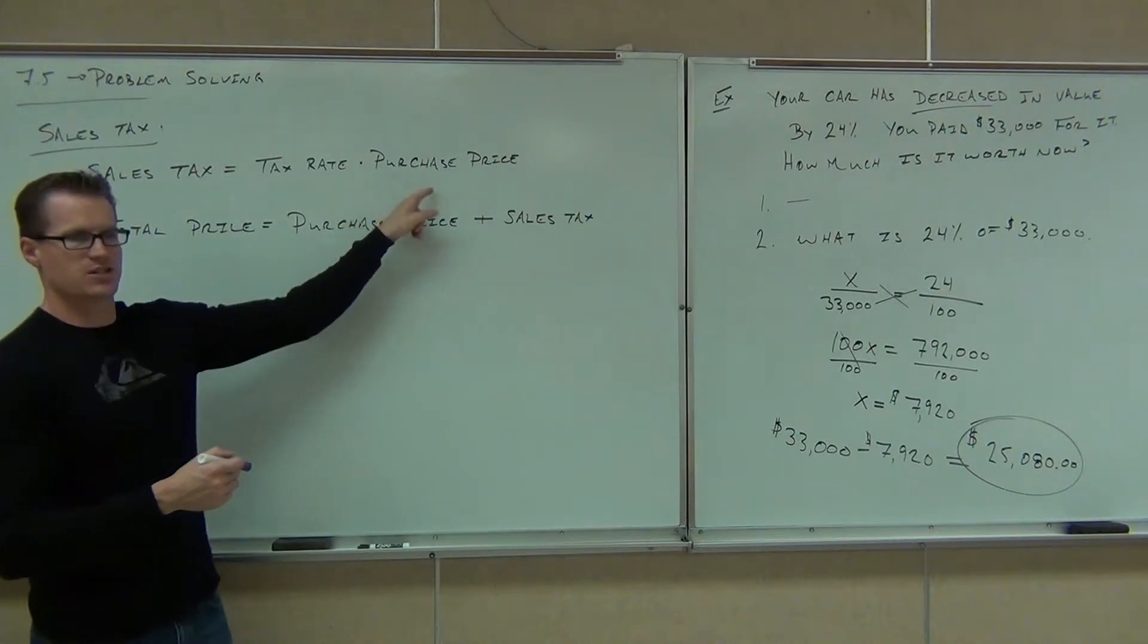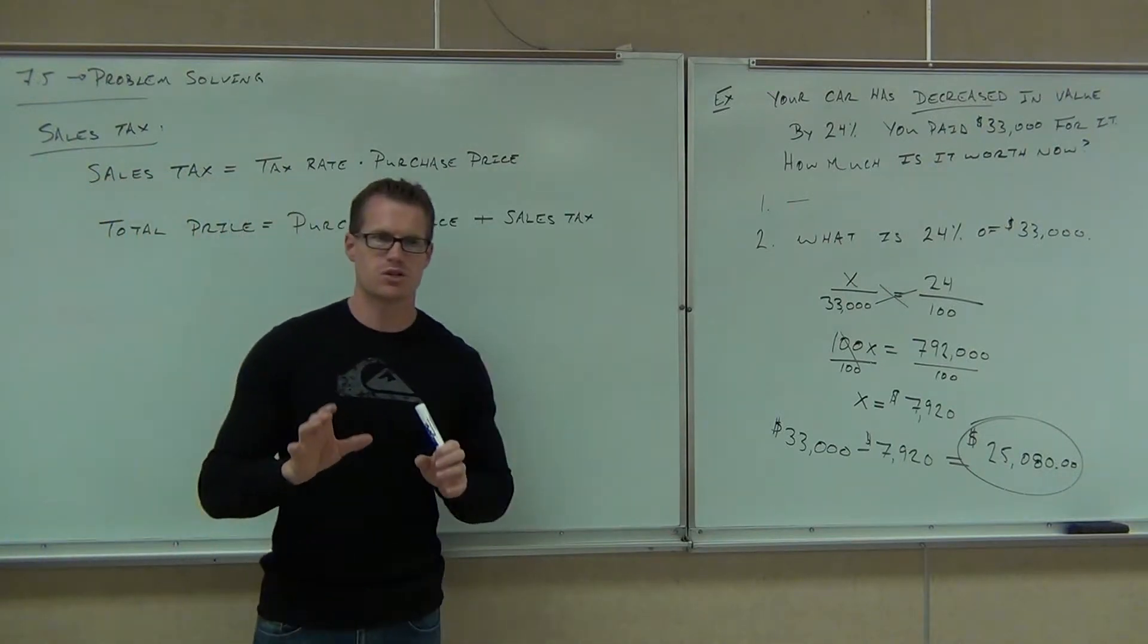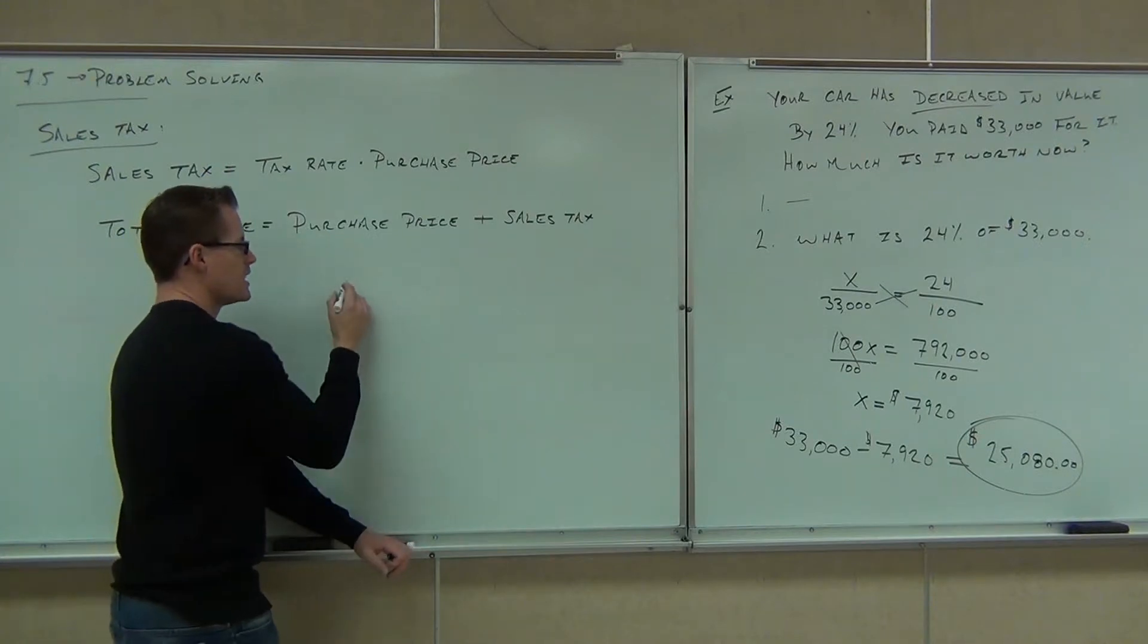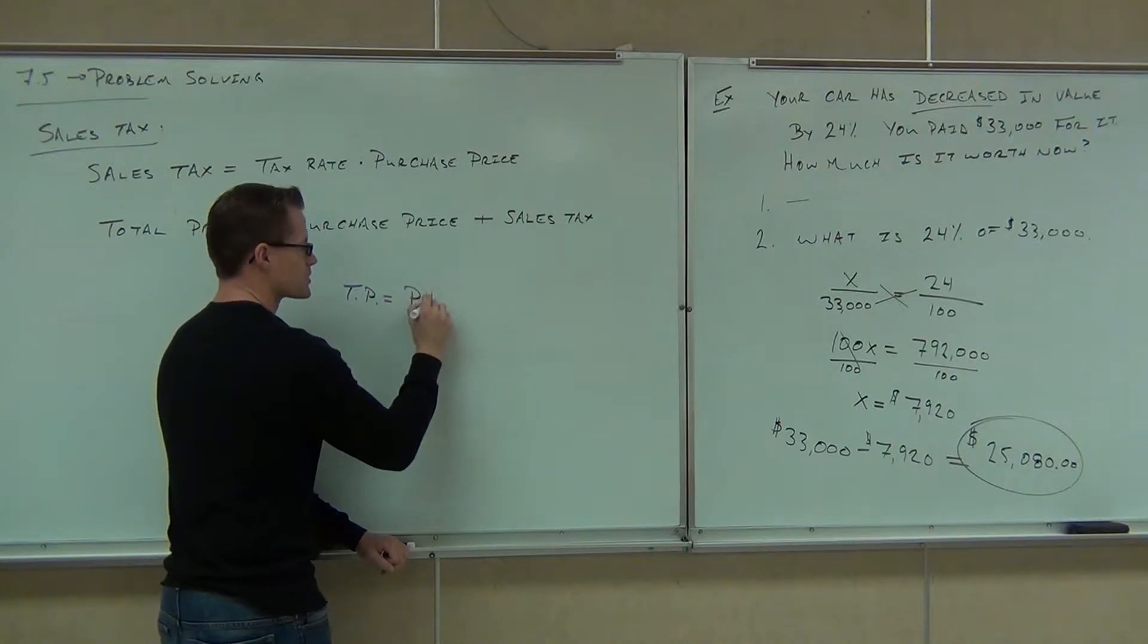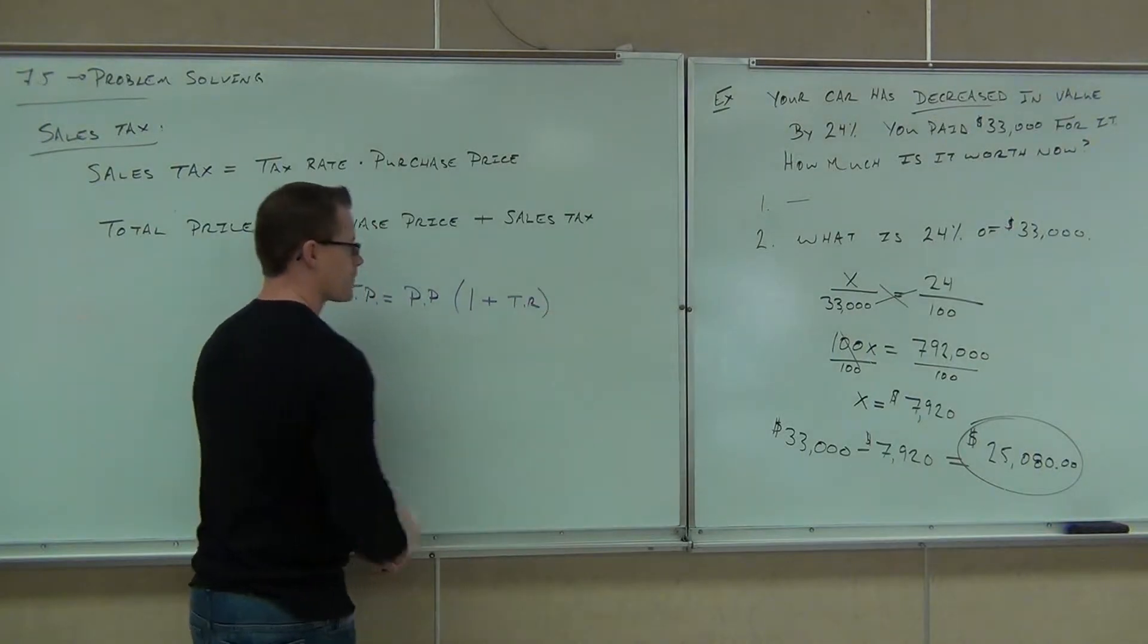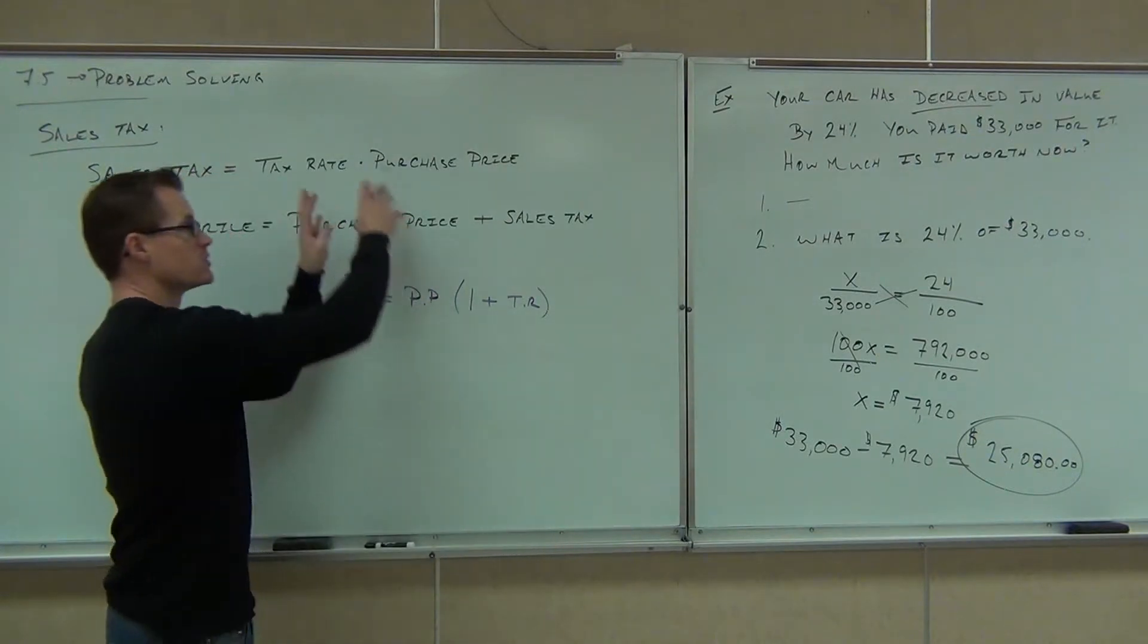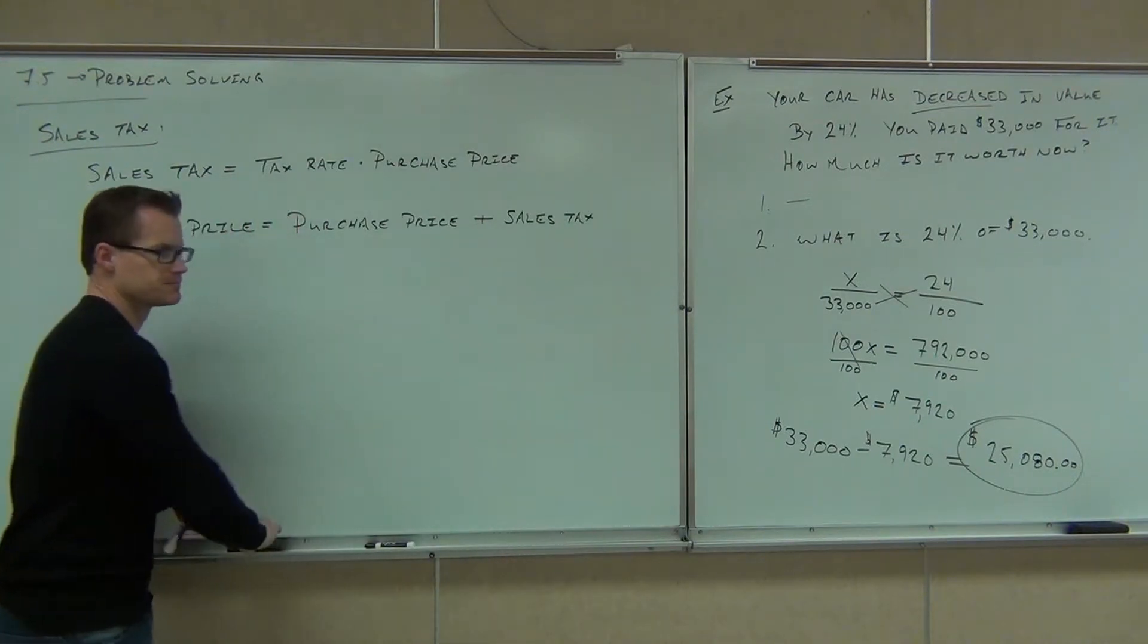You're going to notice that there's two purchase prices here. Do you see that? You can actually find this out a little bit different if you do some factoring, which we don't know how to factor, but I'll give this to you in real life. This is how you would do it. You would say, this is off to the side, we're not going to work with this, but just for your own edification, if you want to find out total price, what you do is you take the purchase price and you multiply it times one plus the tax rate. You take your tax rate in terms of a decimal, you add it to one, you multiply that by your purchase price, that will give you your total price. It's easier than doing both of these things.